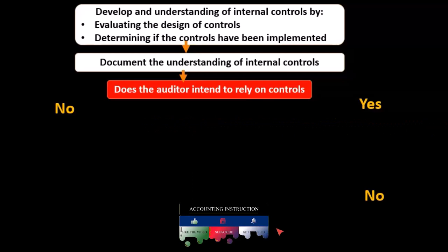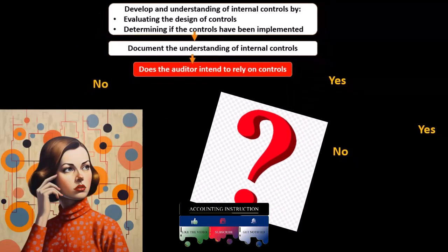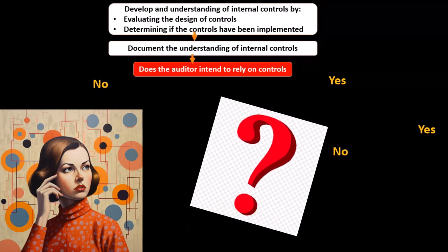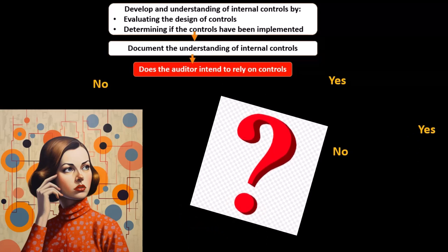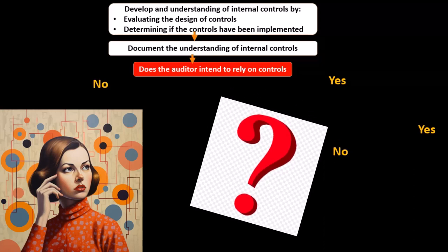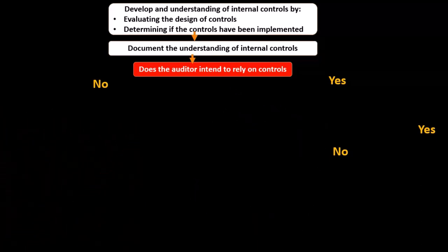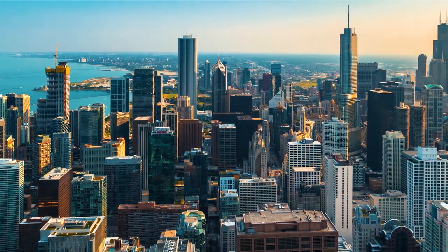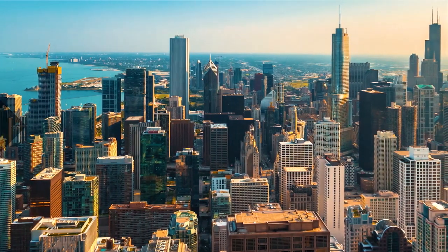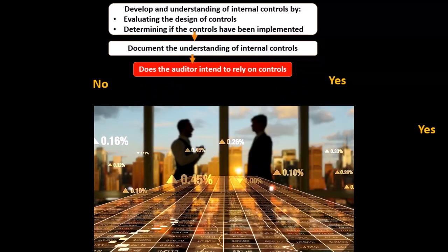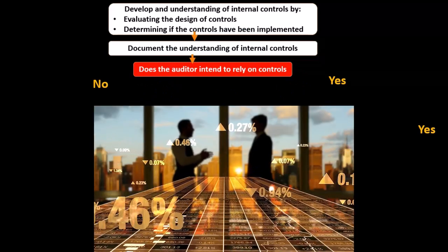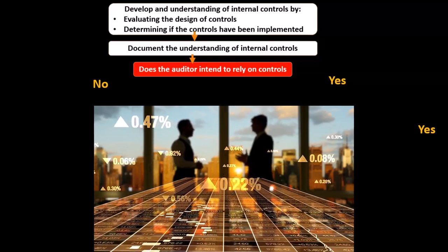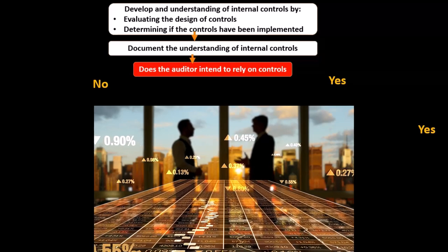The question is: does the auditor intend to rely on the controls? For publicly traded companies, we will probably say yes, because we typically can't do enough substantive testing in the time frame to fully support the audit. If we cannot rely on the controls, we're in trouble — we need to consider whether we can complete the audit within its scope.